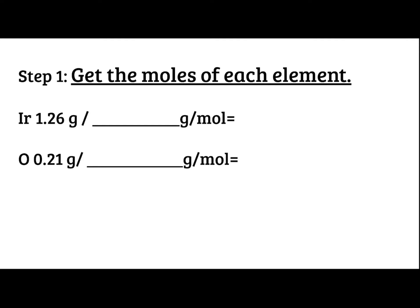So we first need to convert that into moles. So if you're looking at your mole map, if I'm going from grams to moles, all I need to do is divide by the molar mass. So I have the mass of iridium, and I can divide and I get 0.0065 moles. I'm going to do the same thing with oxygen, convert that to moles, so it's 0.013 moles.